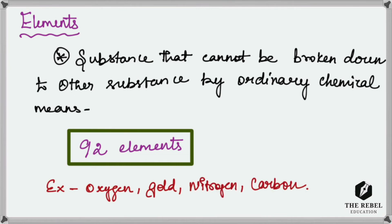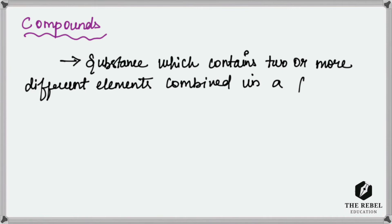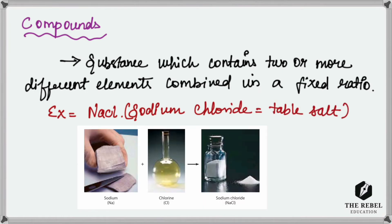So next, move on to compounds. Compounds are substances which contain two or more different elements combined in a fixed ratio. One of the best examples for compounds is sodium chloride, which is table salt. In sodium chloride, sodium is a metal and chlorine is a poisonous gas.